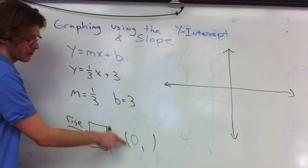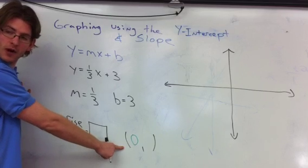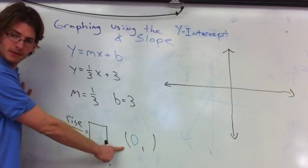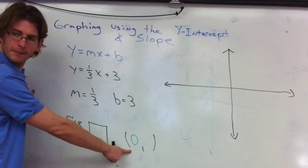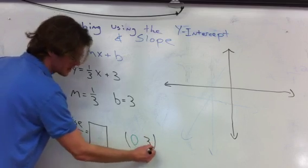Ava, since our b is three, where is our graphing across the y-axis? Three. Tell me it's a point. Zero, three. Yeah, zero, three. Perfect.